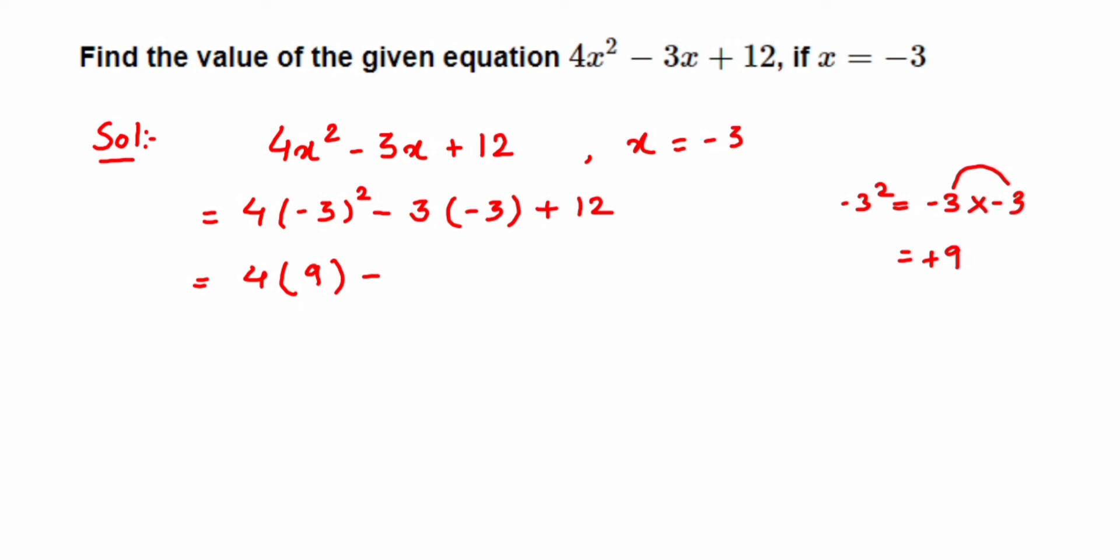So 4 into 9, then minus 3 into minus 3 will be plus 9, so we'll get here plus 9, and then we have a plus 12. Now multiply 4 and 9. 4 times 9 is 36. Now add 9 plus 12.